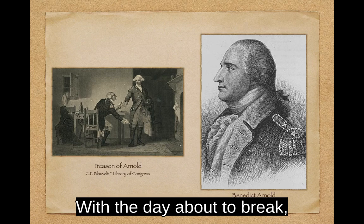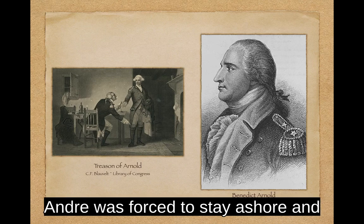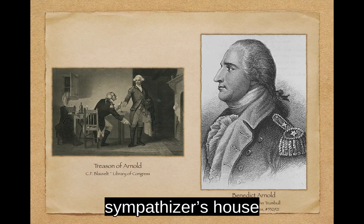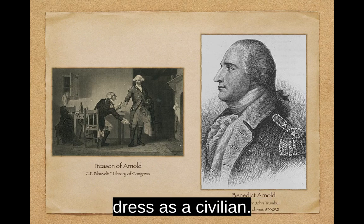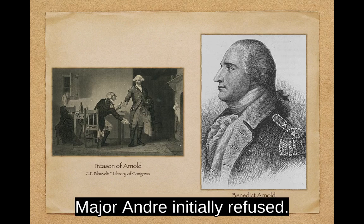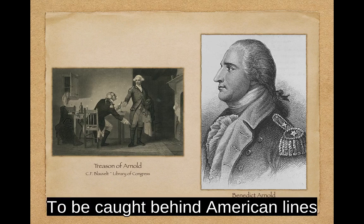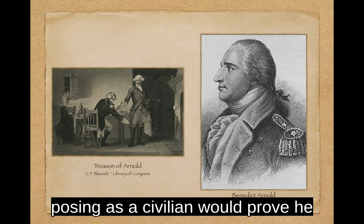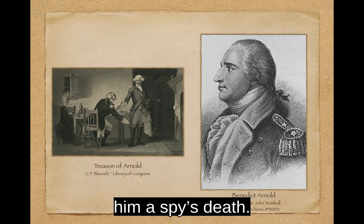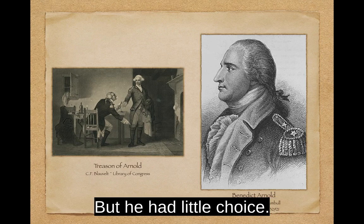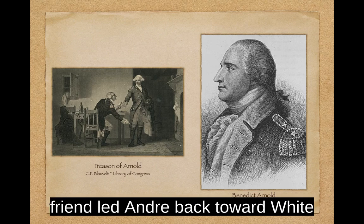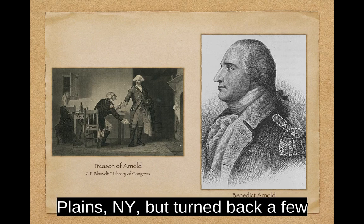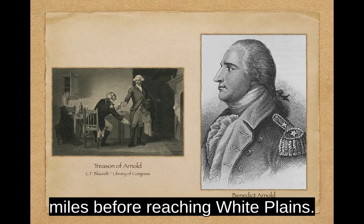Though no one knows exactly what was discussed, they spoke until almost dawn on September 22, 1780. With the day about to break, Andre was forced to stay ashore, and Arnold led him back to a sympathizer's house behind American lines. To return to the British, Arnold suggested Andre dress as a civilian. Major Andre initially refused — to be caught behind American lines posing as a civilian would prove he was a spy and guarantee him a spy's death. But he had little choice. The following day, Benedict Arnold's friend led Andre back toward White Plains, New York, but turned back a few miles before reaching it.